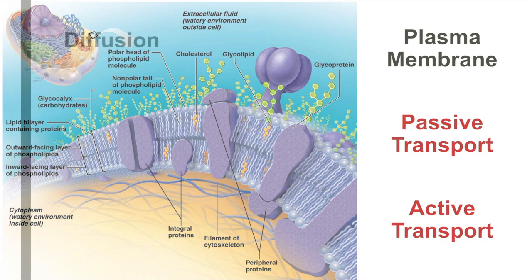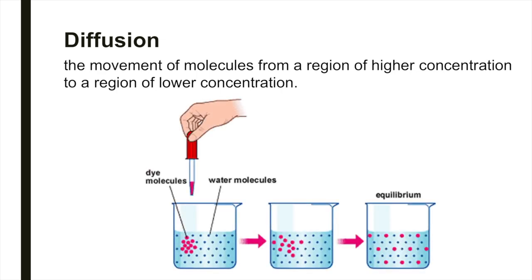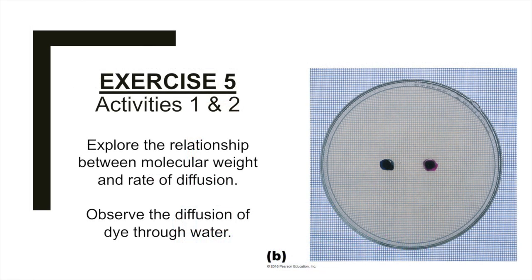Two important passive processes of membrane transport are diffusion and filtration. Diffusion is the movement of molecules from a region of higher concentration to a region of lower concentration. If you were to place a highly concentrated drop of dye in a glass of water, you would be able to observe the movement of dye down its concentration gradient from an area of high concentration to an area of low concentration. If left undisturbed, the dye would eventually become evenly distributed throughout the glass. The rate of diffusion depends on molecular size and temperature — smaller molecules move faster, and molecules move faster as temperature increases. In exercise five, activity one, you'll explore the relationship between molecular weight and rate of diffusion by observing the diffusion of dye through agar gel. In activity two, we'll observe the diffusion of dye through water with a class demonstration.